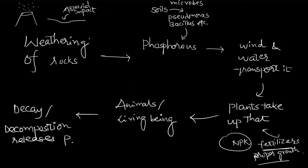The weathering of rocks is the most primary source of phosphorus — wherever weathering of rocks takes place, phosphorus is produced. Other sources include volcanic eruptions, which release phosphorus, and asteroid impacts, which also give rise to phosphorus.